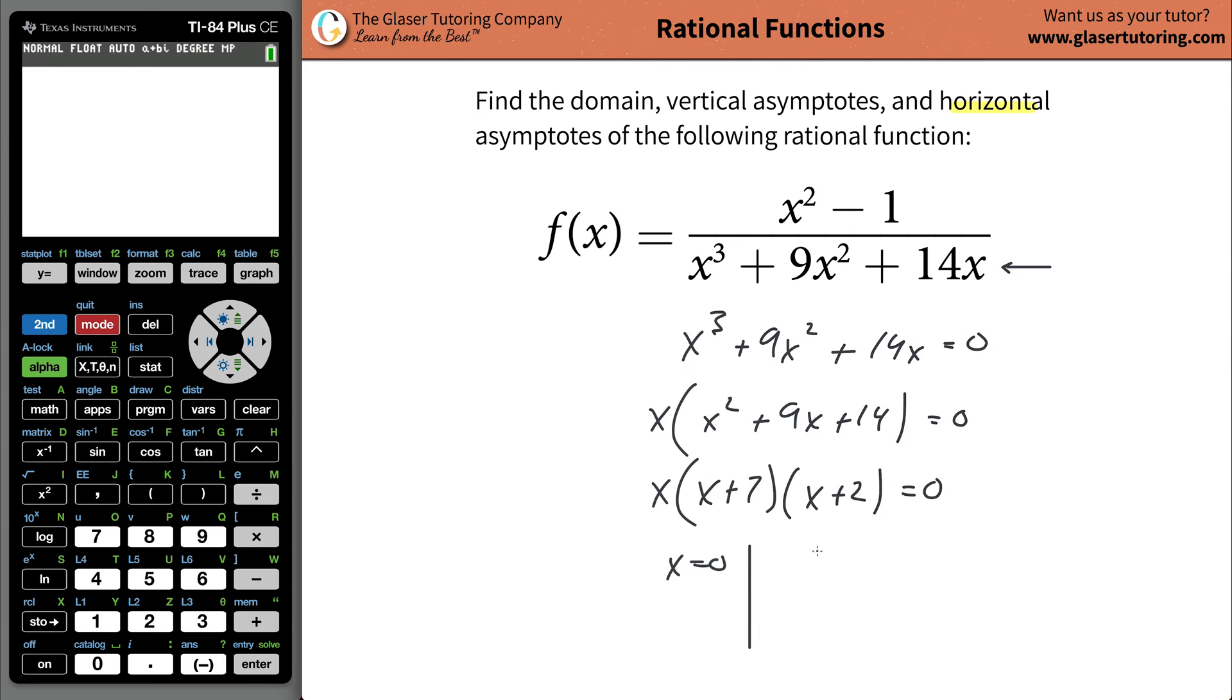And now you basically have three things you're going to set equal to zero. You're going to have x equals zero, that's simple. Then you have x plus seven equaling zero, and then you're going to have x plus two equaling zero. And both of these then would be solved for x, and you would have your three values here: x being zero, x being negative seven, and x being negative two.